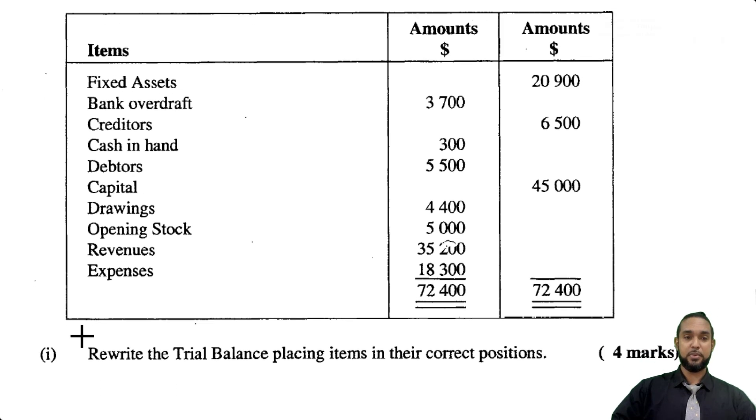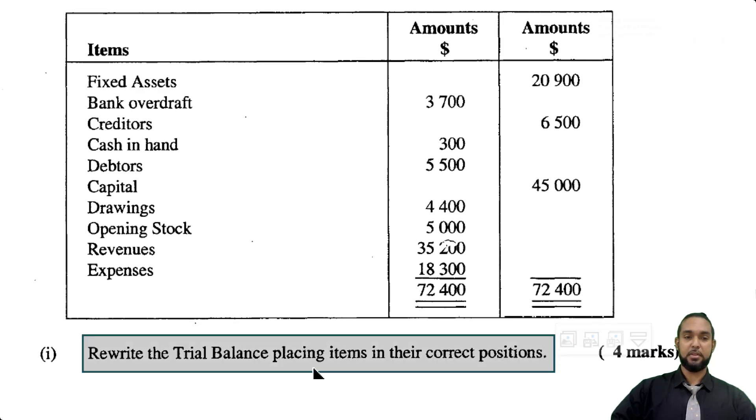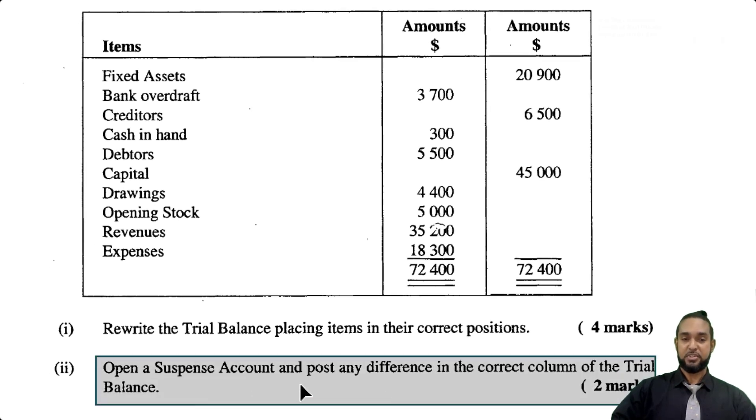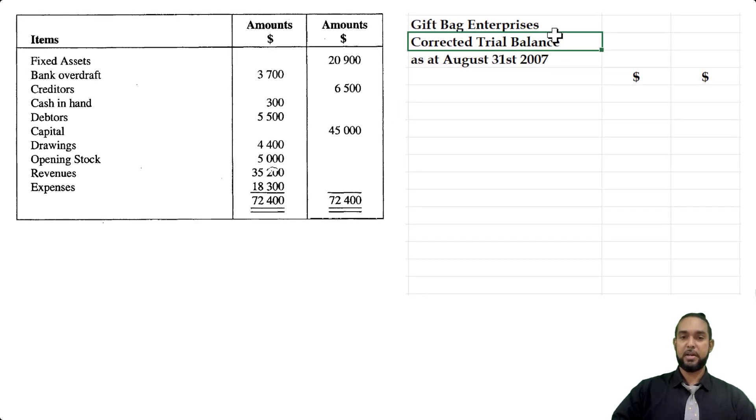Now the first thing we have to do as it says here is rewrite the trial balance placing items in their correct positions and then following that we have to open a suspense account and post any difference in the correct column of the trial balance. Okay so Gift Bag Enterprises corrected trial balance as at August 31st 2007. So the non-current assets belong in the debit column. As a matter of fact, let's put DR and then CR there just to emphasize.